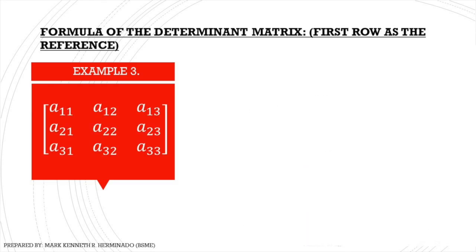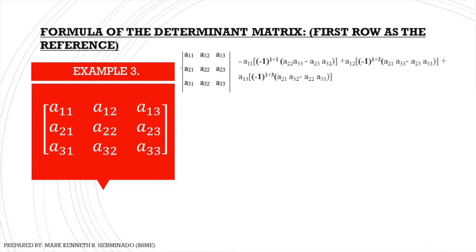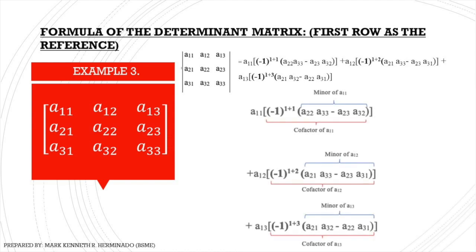So for example number 3, para mas maintindihan pa natin ang concept ng minors and cofactors, we have a formula for the determinant of a 3x3 matrix here, with the first row as the reference. As you can see, ayun na yung formula para makuha ang determinant ng 3x3 matrix. So pag-iwakiwalay natin sila, makikita nyo yung difference ng minor and cofactor. Yung minor, naobtain siya by deleting the entire row and column kung saan nakalagay yung element, while yung cofactor naman ay yung negative 1 times the row number plus column number times the minor. Ang cofactor ay ang signed minor.